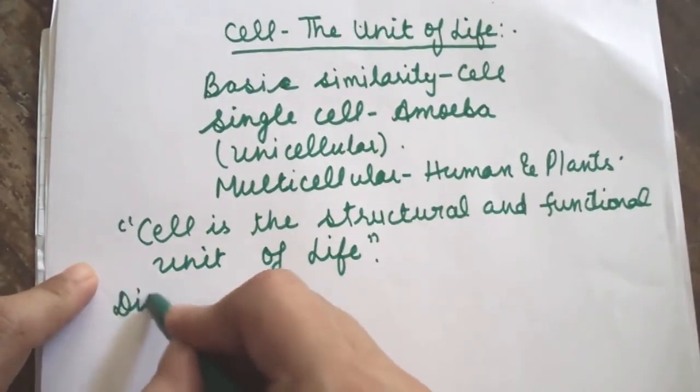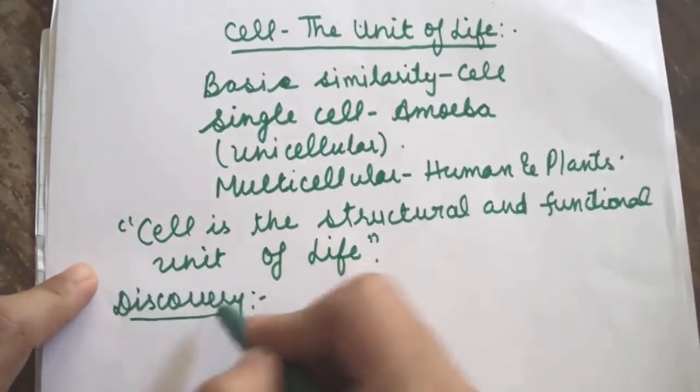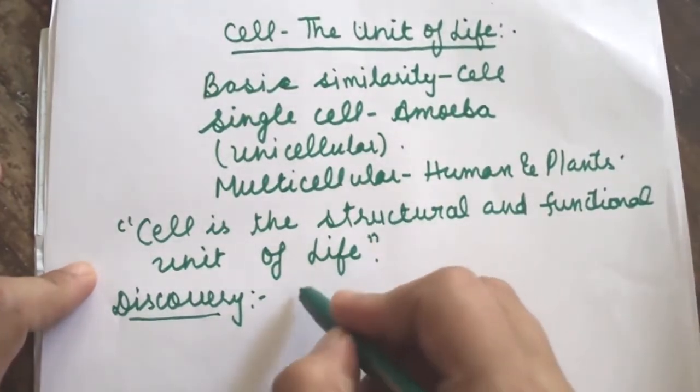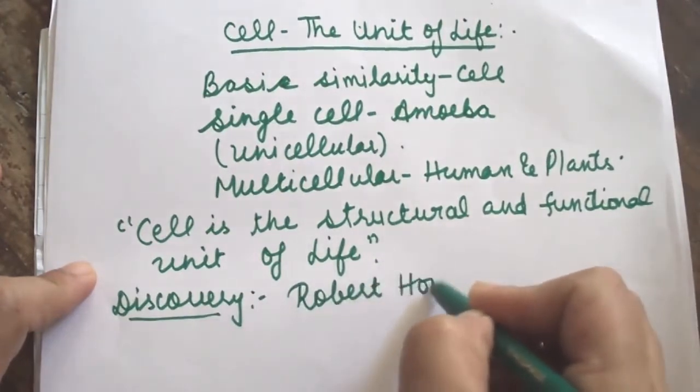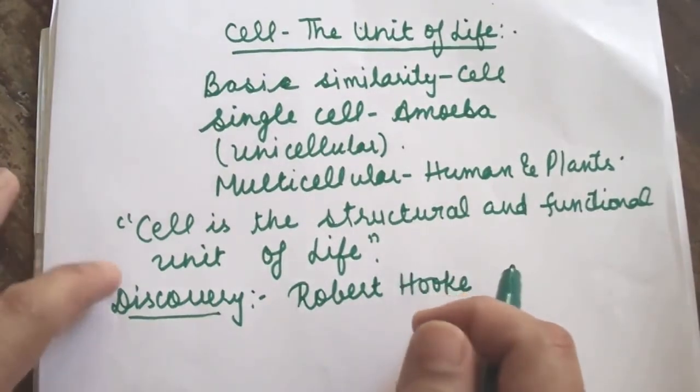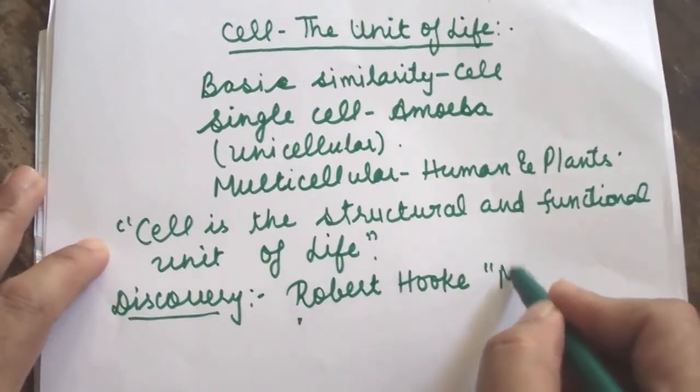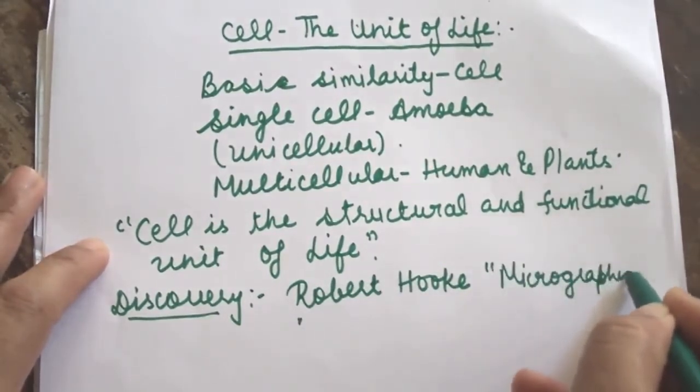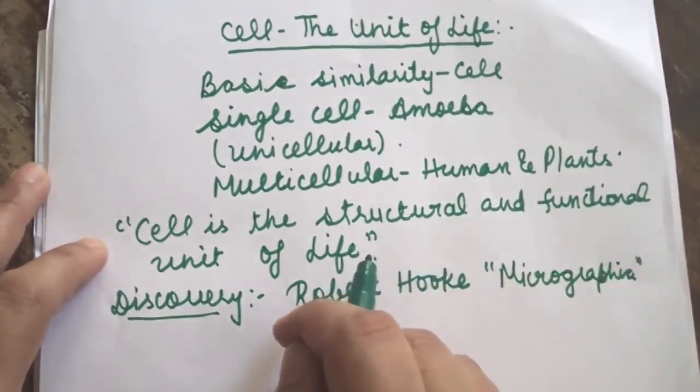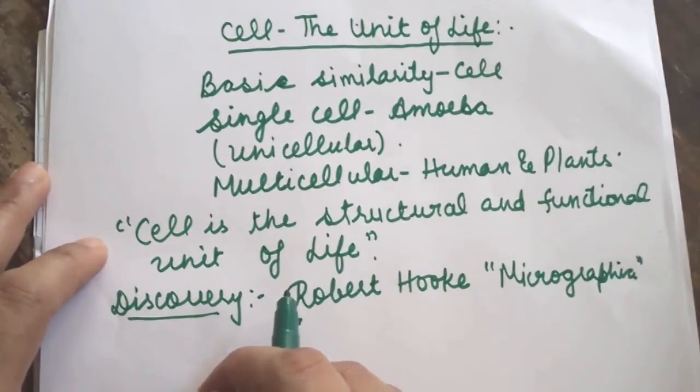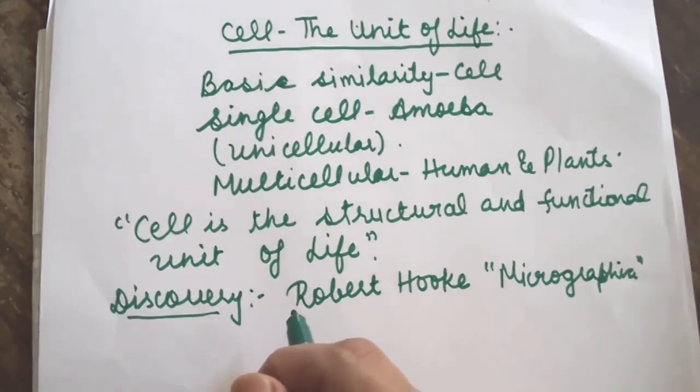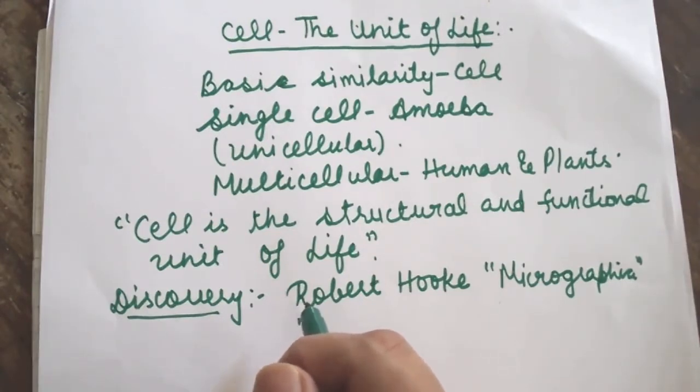Now, discovery of the cell. Who discovered the cell? The term cell was introduced by English scientist Robert Hooke in his book named Micrographia. In 1665, while studying thin slices of cork under self-designed primitive microscope, he was amazed to know that the cork resembled a house with tiny compartments. He actually observed dead cells of plants which looked like small empty rooms. Robert Hooke named them as cell. Cell means a little room.